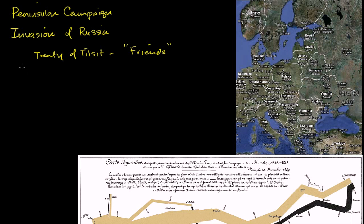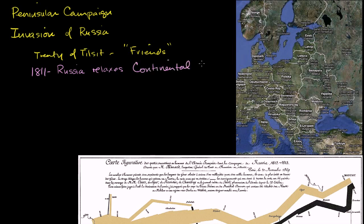But then we move forward to 1811. Russia starts relaxing the continental system, essentially meaning that they started to trade a little bit with Britain. This begins to annoy and anger Napoleon.